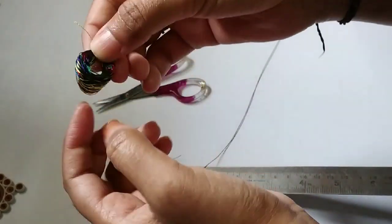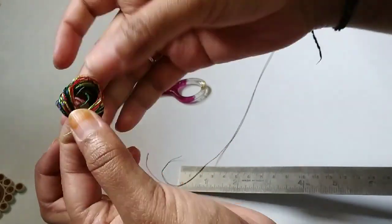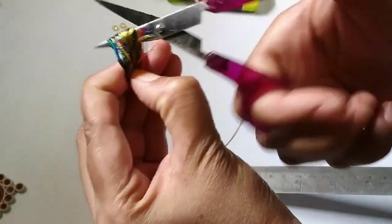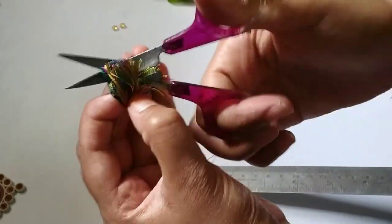So once we pull out, now hold on the side where we have tied the knot and cut on the other side so that we get both sides equal.